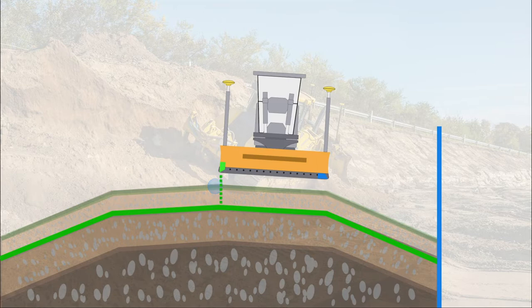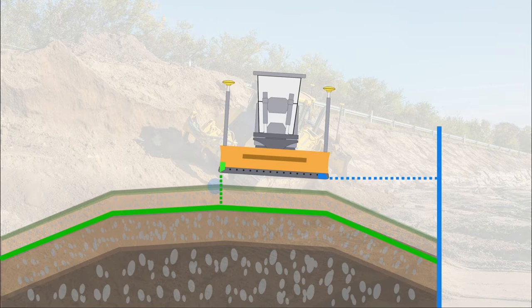MC1 calculates the cut-fill values and side distances between the chosen tool points and the offsetted active references. Knowing which offset value to use for each task is a key advantage for the operator, because it helps to make the right results highly effectively.